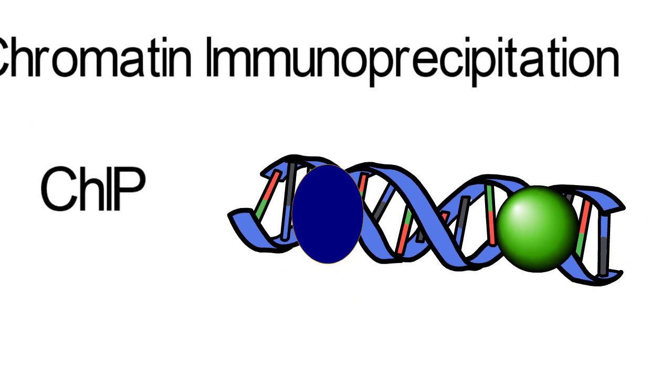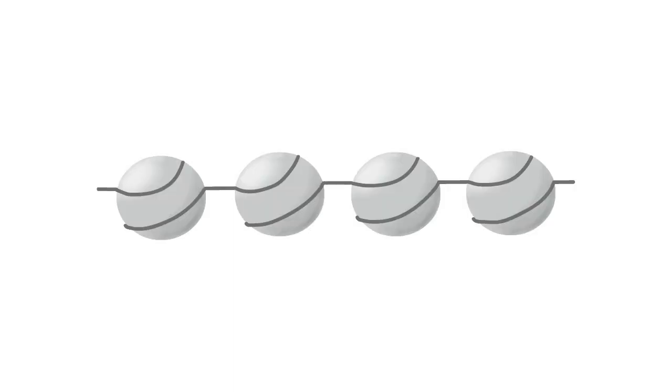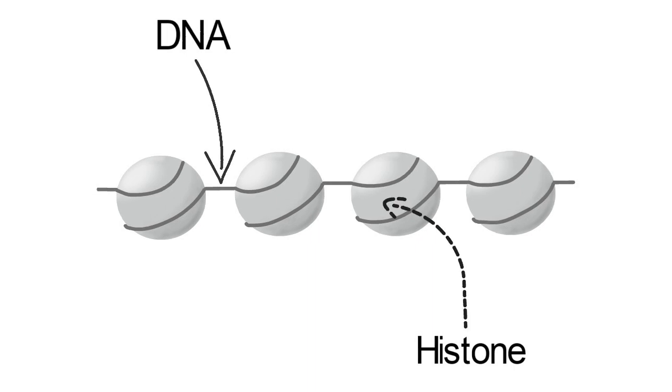Chromatin is the form of DNA that is found in the nucleus. It consists of DNA wrapped around proteins called histones. This allows the DNA to become compacted and take up less space in the nucleus. For the rest of this video, chromatin will be represented by this line for simplicity.